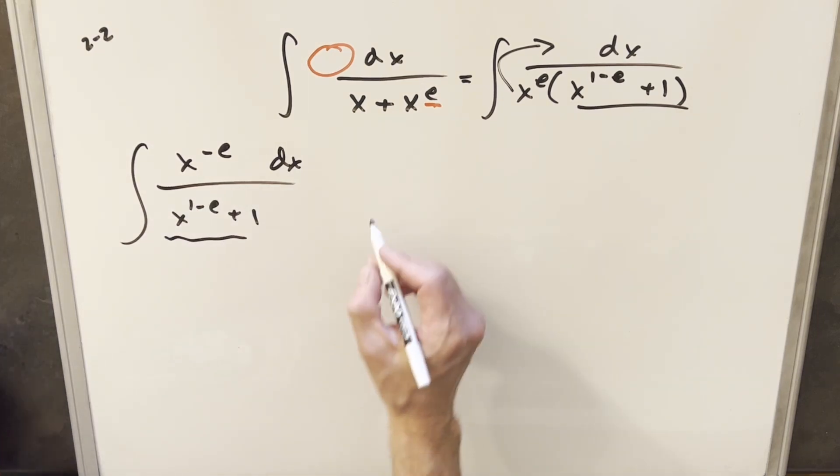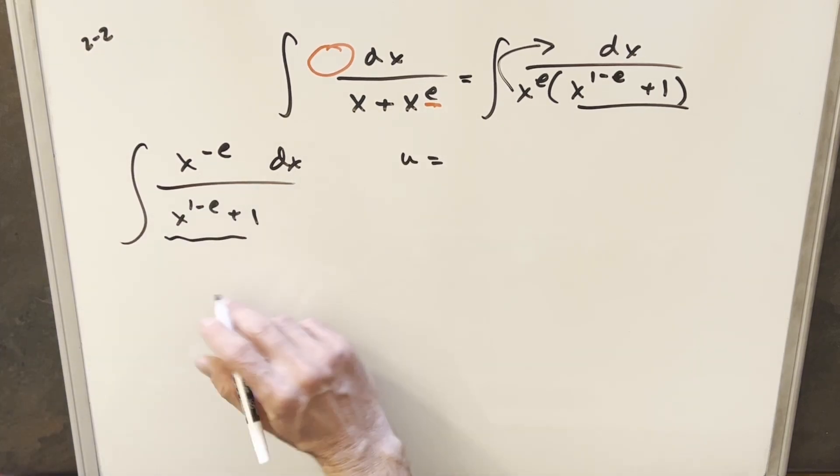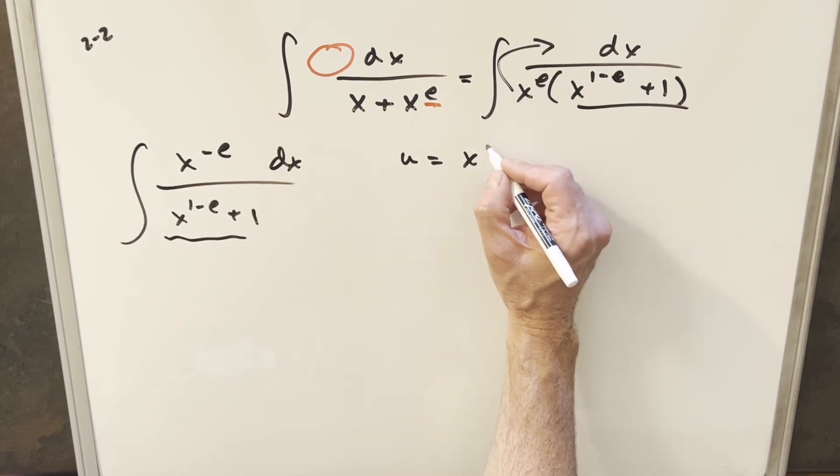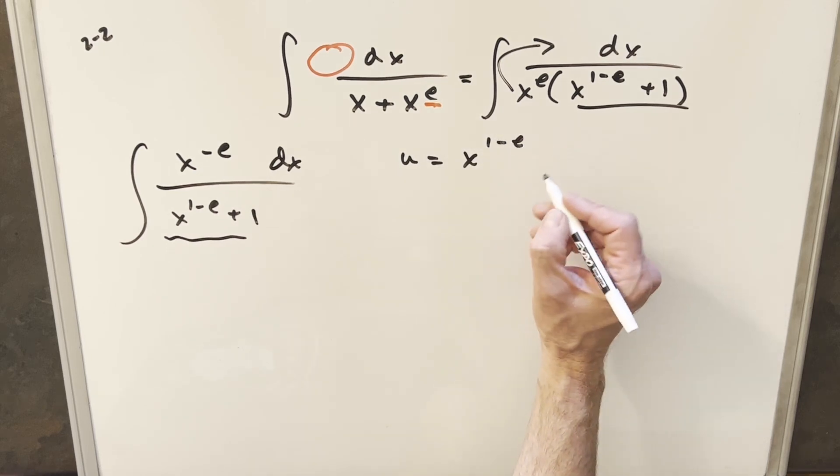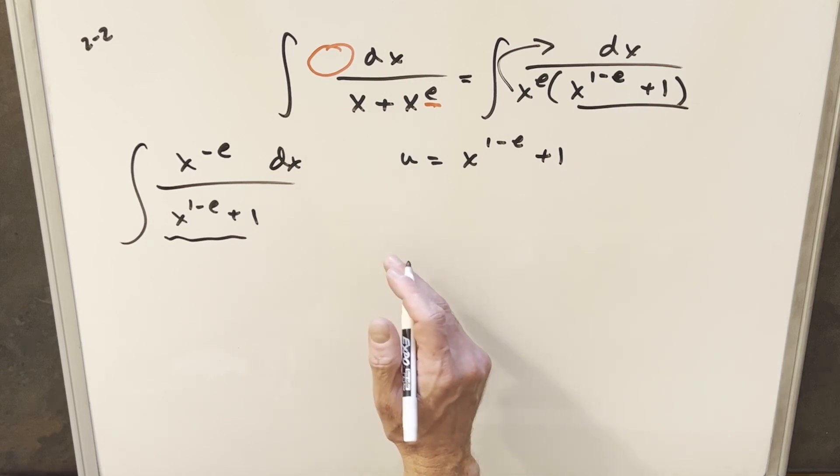And then now using this, I'm going to try to do a u substitution. So I'll make that whole denominator my u. So we'll say u is going to be equal to x to the one minus e plus one. I'll take a derivative.